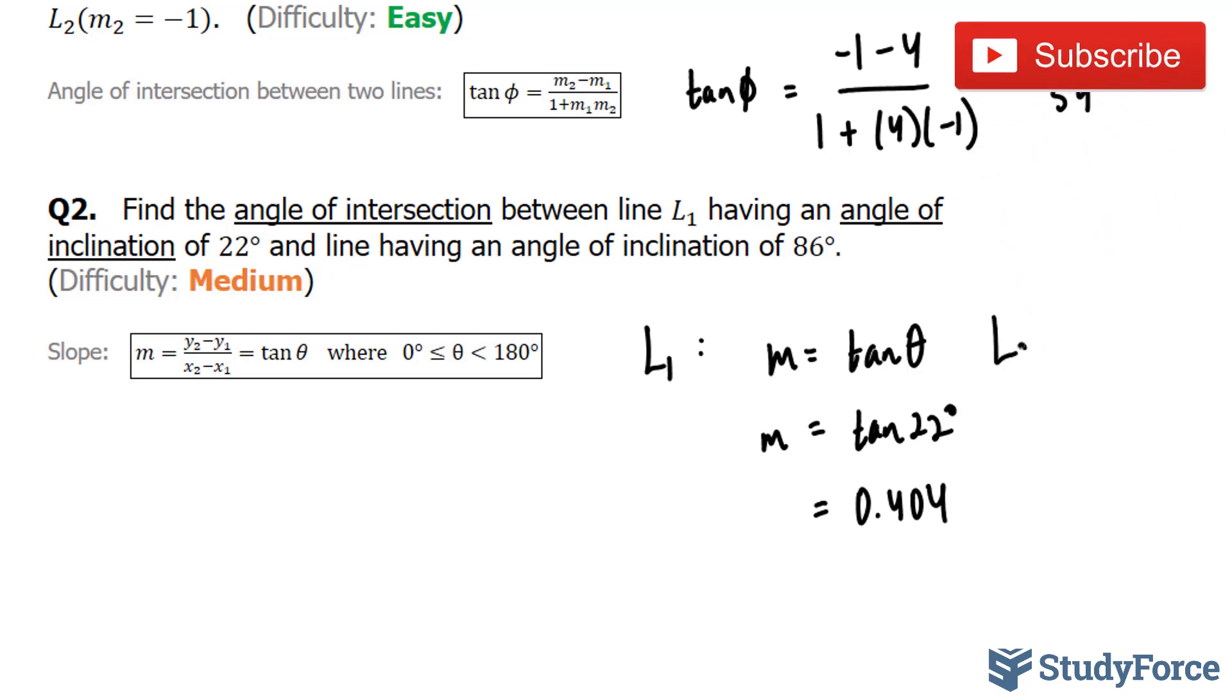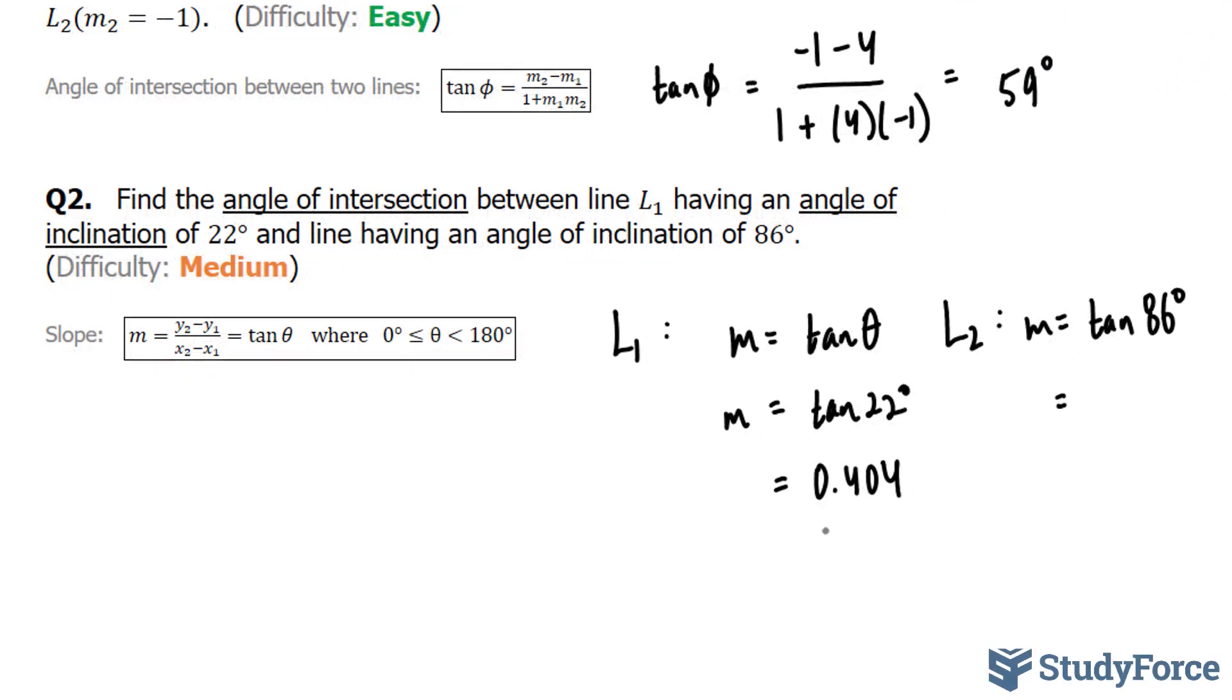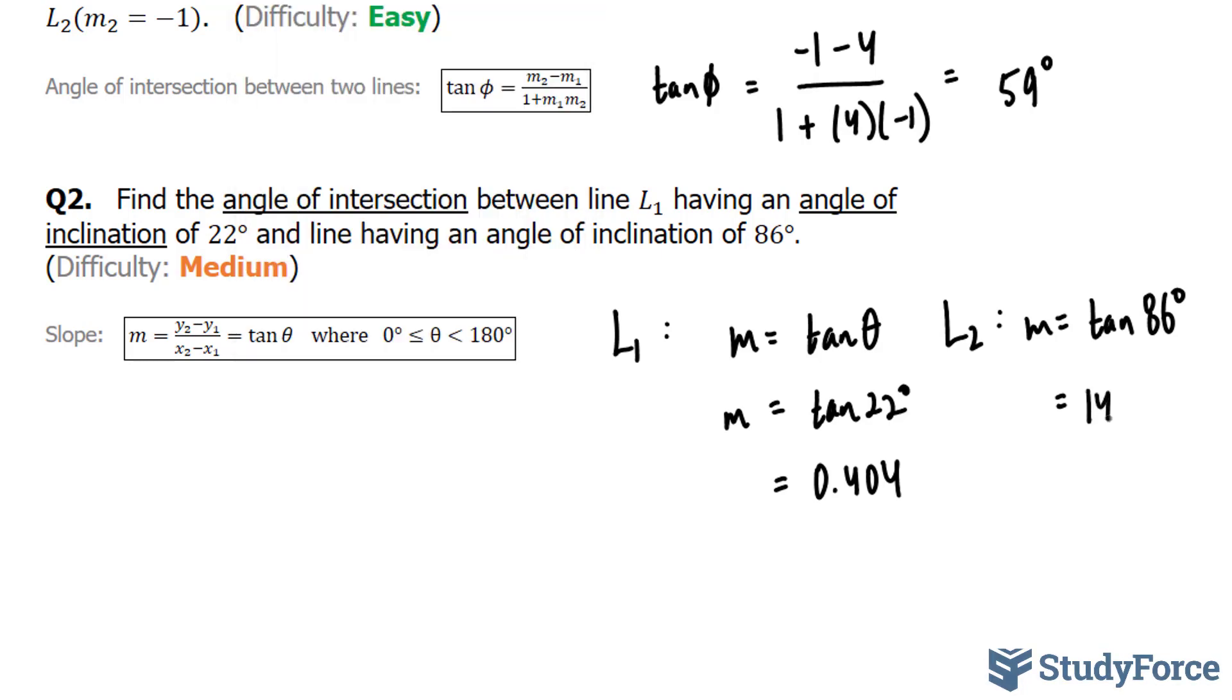Now for L2, we'll do the same thing, where m is equal to tangent 86 degrees. Using our calculator, it's a straightforward calculation. We end up with 14.3, that is the slope for the second line.